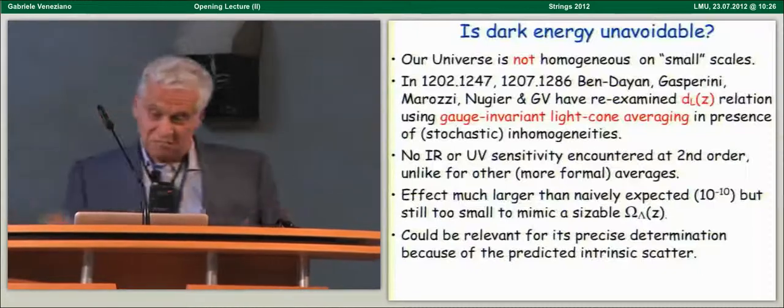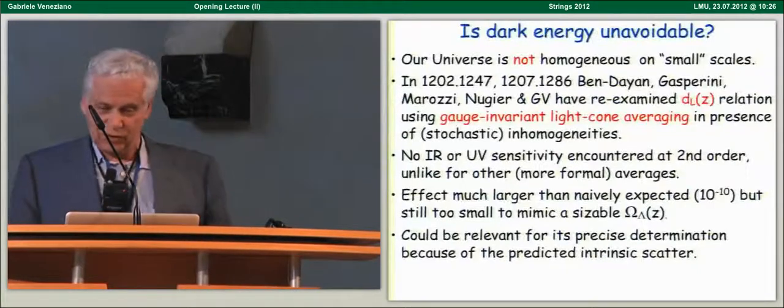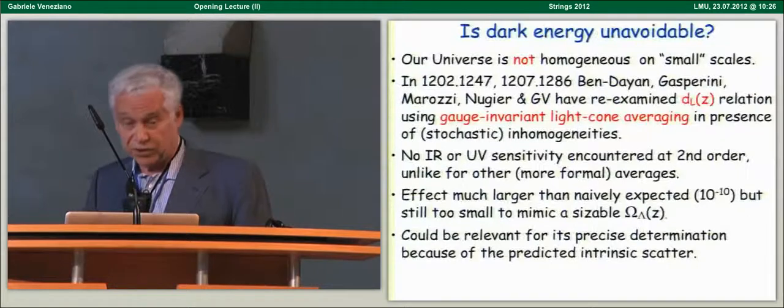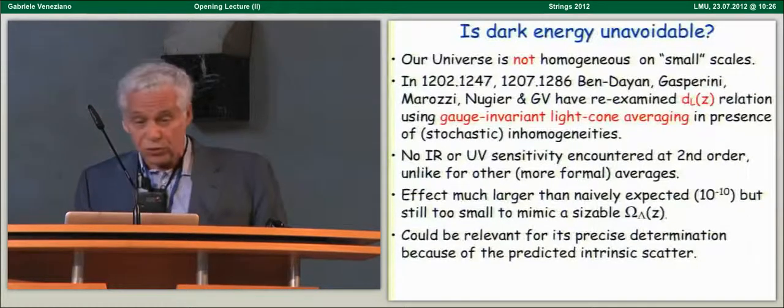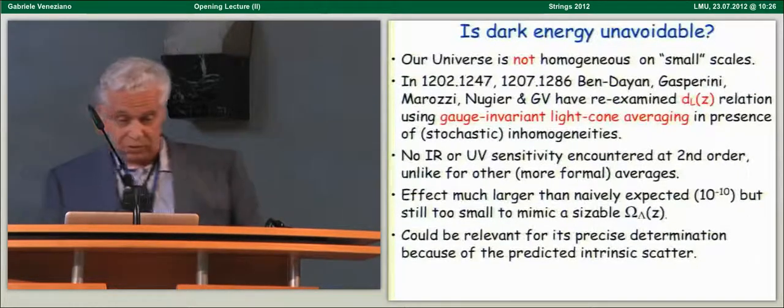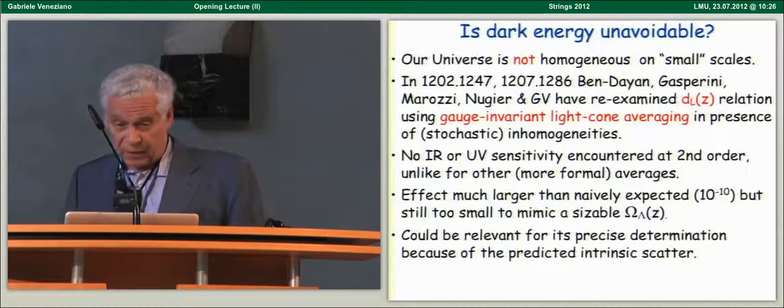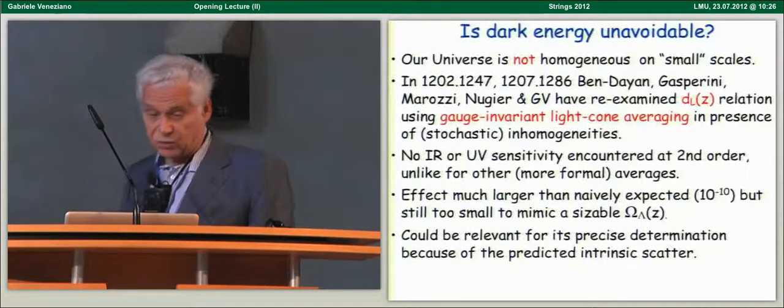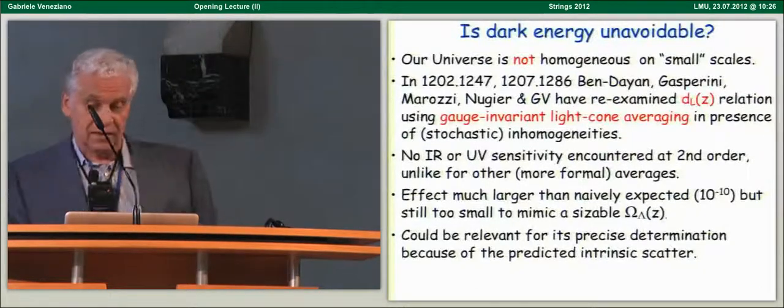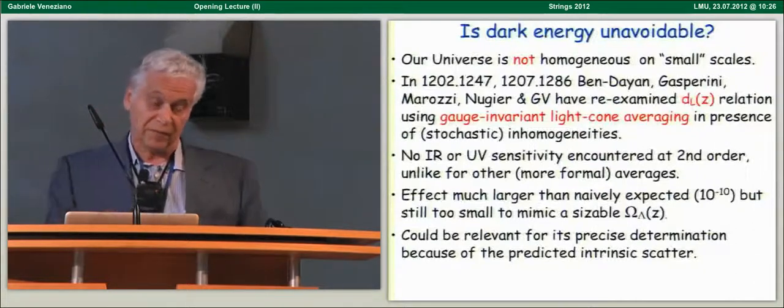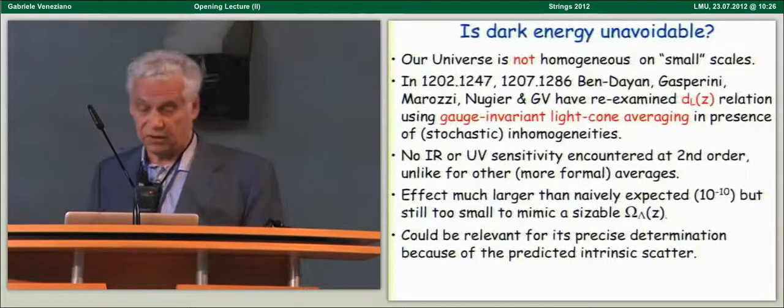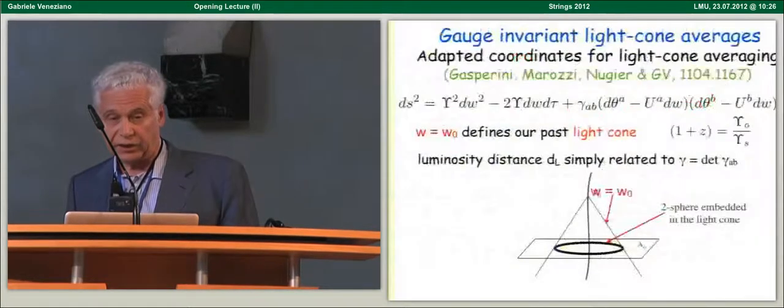There are no such divergences, which are encountered in other more formal ways of performing the average. And the bottom line is that the effect, although much larger than naively expected, if you say the gravitational potential is of order 10 to the minus 5, and these effects are quadratic, you could have expected a really miserable 10 to the minus 10. Actually, it's much bigger, but it's still too small to mimic a sizable omega lambda.